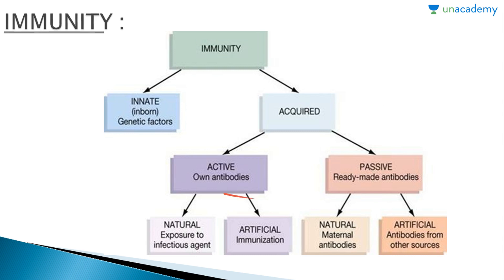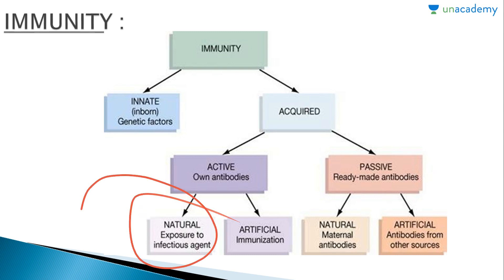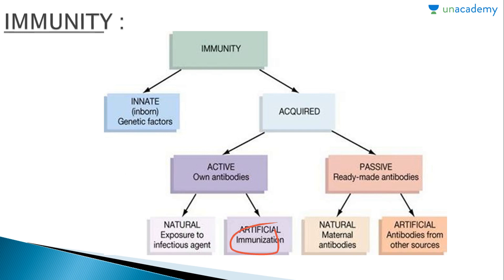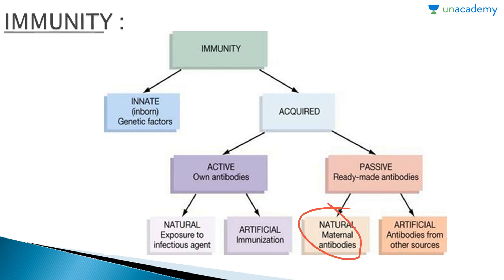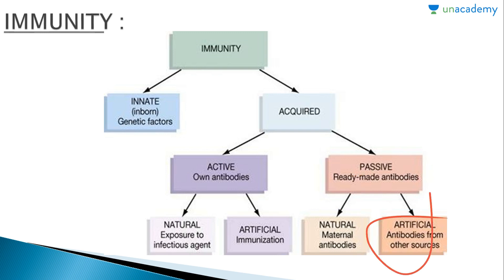Active immunity is of two types: natural, through exposure to any infectious agent naturally, or artificial, through immunization. Passive immunity is also of two types and is provided through ready-made antibodies — natural passive immunity is provided through maternal antibodies via placenta or colostrum, and artificial passive immunity is where antibodies from other sources are obtained.